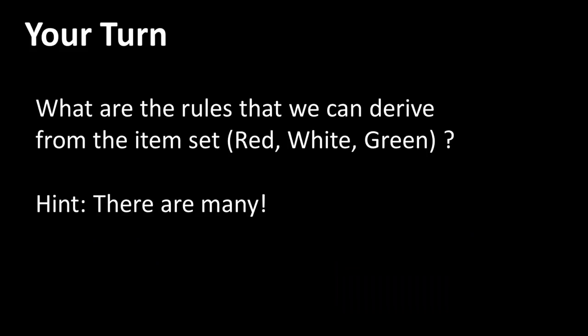First of all, before we get into that, take a look at this set of items: red, white, and green, which is the first row of our data set. Find out all the rules that you can derive from this item set. For example, we've already looked at one rule which says when red is purchased, white is also purchased. You could clearly think of another rule that says when red is purchased, green is also purchased. Another rule that says when white and green are purchased, red is purchased, and so on. So I want you to again stop the video, identify all the rules that you can think of from this set of items, and then once you're done, proceed with the video.